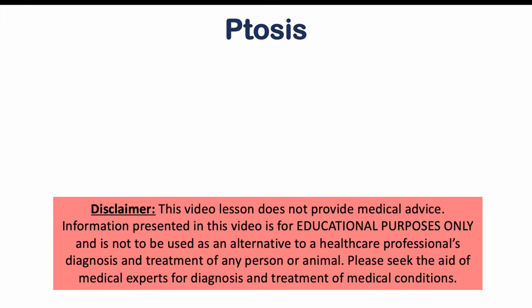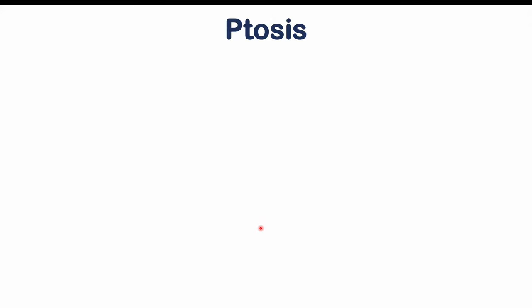Hi everyone. This lesson is on the eye condition known as ptosis. We're going to talk about some of the eye anatomy to better understand why it happens, and we'll also talk about many causes and how it is treated.